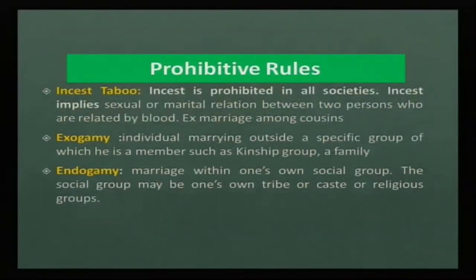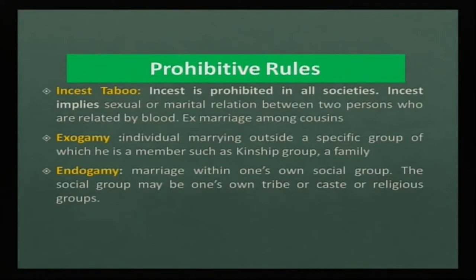There are also prohibitive rules like incest taboo. Incest is prohibited in all societies — it implies sexual or marital relations between two persons who are related by blood. For example, marriage among cousins cannot happen. Similarly, due to incest taboo, a marriage relationship cannot happen between father and daughter, or mother and son. It cannot happen between those who are closely related to each other.